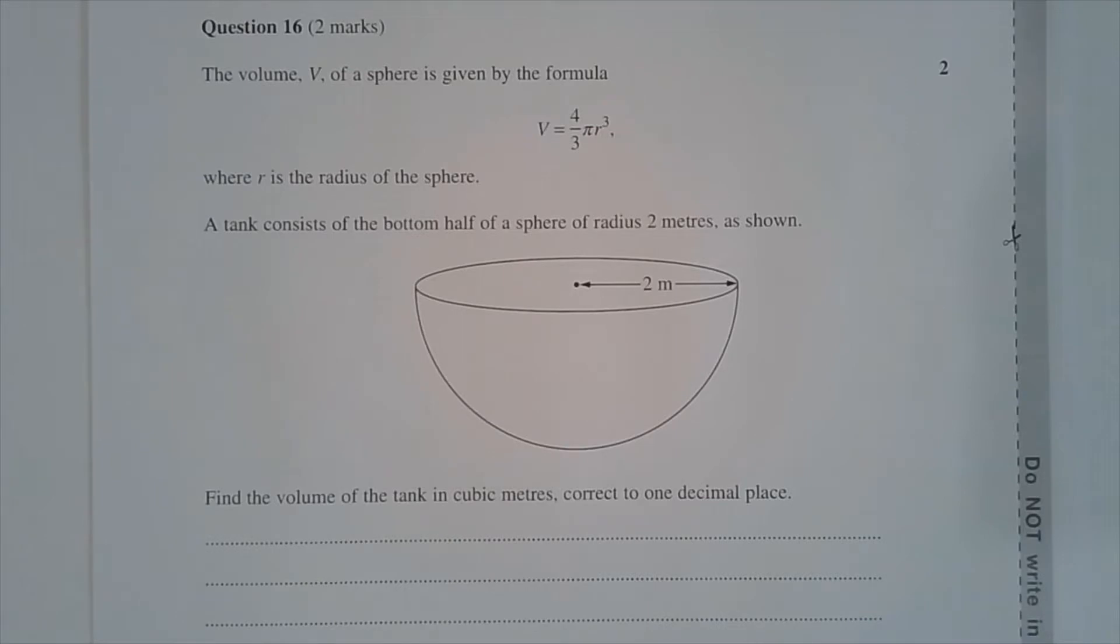Question 16. The volume, v, of a sphere is given by the formula v equals 4 over 3 multiplied by pi r cubed.